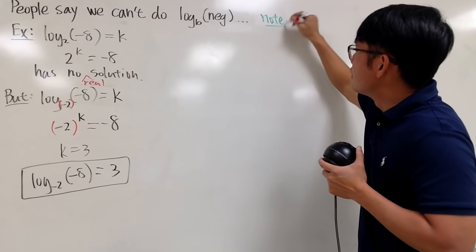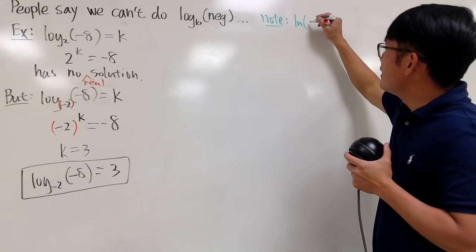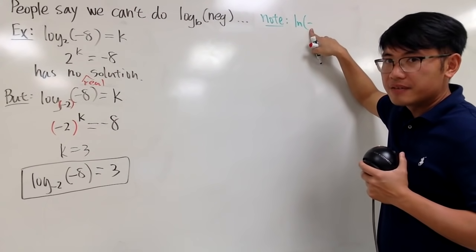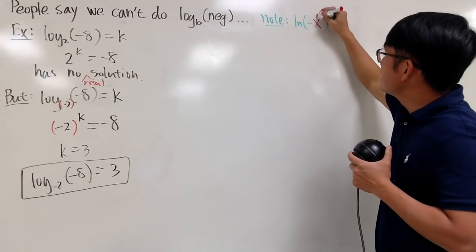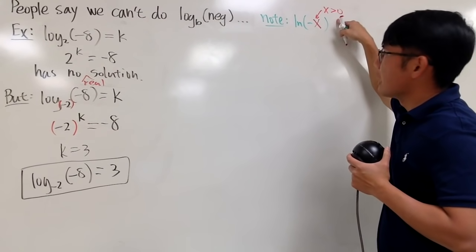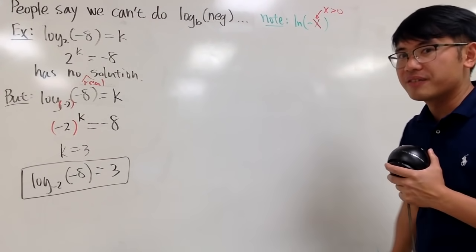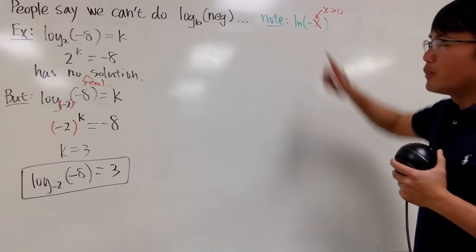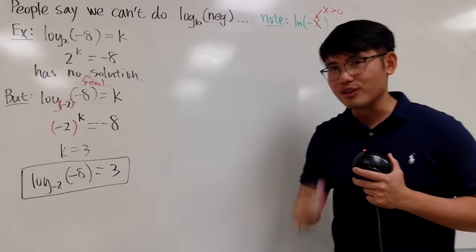Anyway, let me make a note right here for you guys. First of all, we'll be talking about the natural log. And then, I really want the inside to be negative. Let me just write down negative x. And I will emphasize x will have to be positive, so that when you do negative x, this has to be strictly negative. And, by the way, natural log of 0, log of 0, it's not defined, so don't even try.